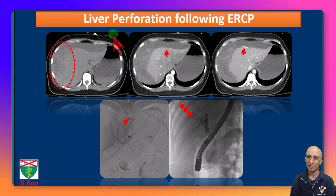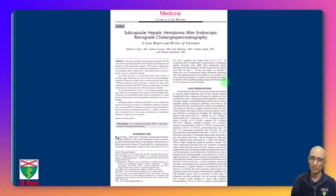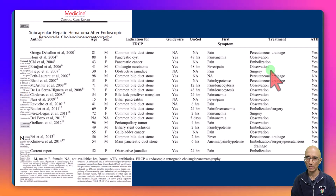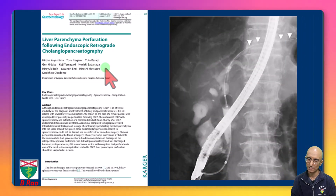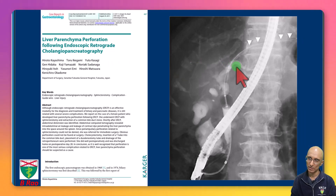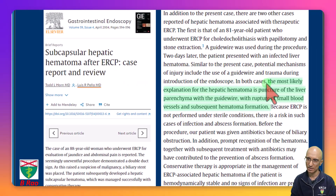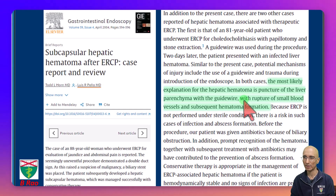We are dealing with a patient who has undergone liver parenchymal perforation following ERCP. On literature review, this is a very rare complication — based on the search of the literature there appear to be fewer than 25 cases published so far. In a similar case report, they demonstrated the guide wire was extending far beyond and potentially causing liver parenchymal injury, and hypothesized that the most likely explanation for hepatic hematoma is puncture of the liver parenchyma with the guide wire, causing rupture of small blood vessels with subsequent hematoma formation.